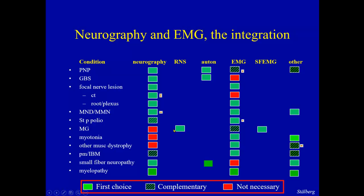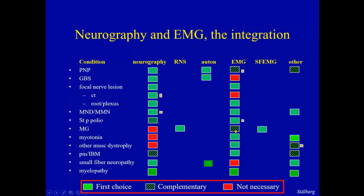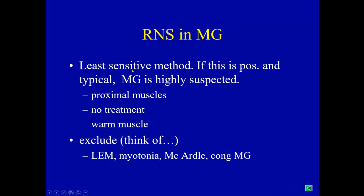In myasthenia gravis, if single fiber EMG is available, that is the most sensitive test. One can start there to find increased jitter with normal fiber density — meaning jitter is not due to reinnervation. We do not expect a normal single fiber EMG finding in a muscle that is weak; that would definitely exclude myasthenia. In many places the single fiber technique is not available, and therefore repetitive nerve stimulation is very useful. It is less sensitive, but if it shows positive results with a typical finding, myasthenia is highly suspected — particularly if we test proximal muscles in an untreated patient with a warm muscle.